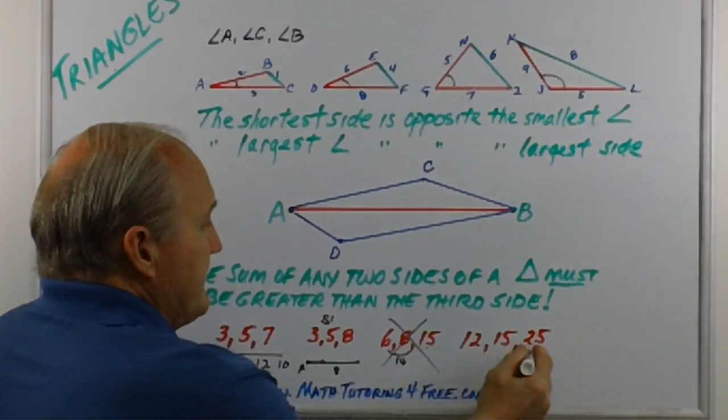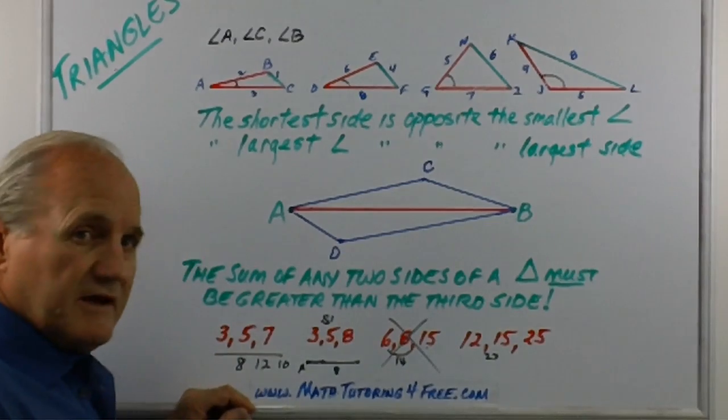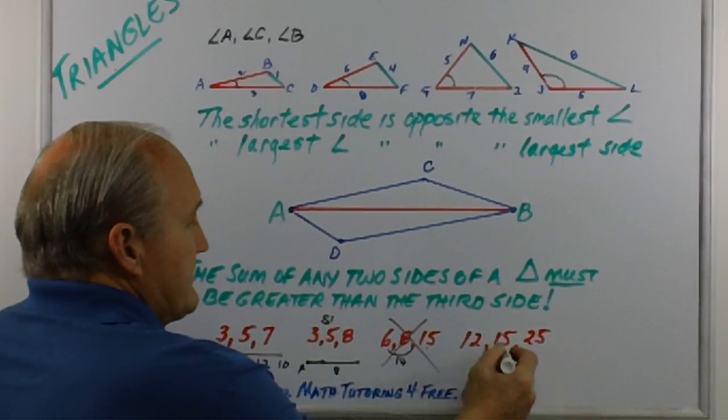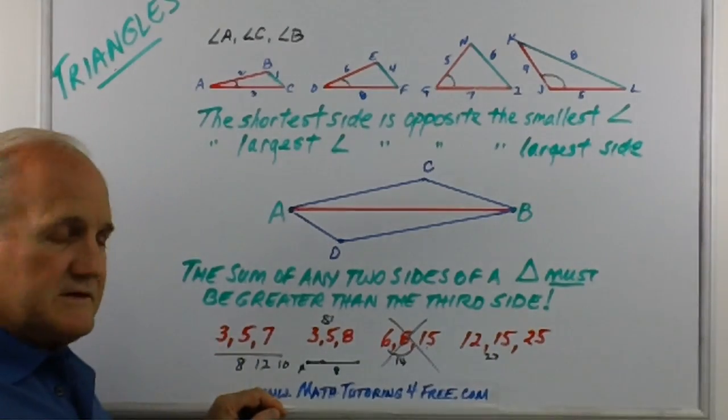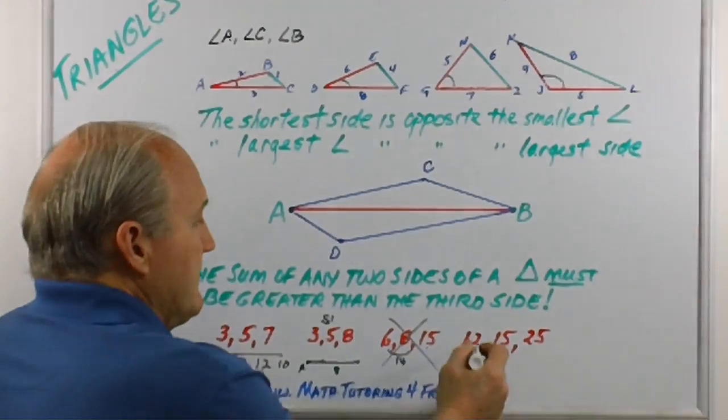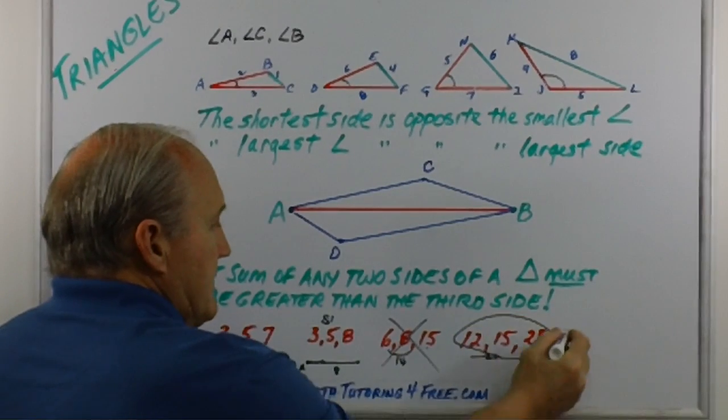Here we go: 12, 15, 25. 12 and 15, that's 27, that's greater than 25, that works. 15 and 25 is 40, that's greater than 12, that works. And finally, 12 and 25 is 37, that's greater than 15, so this one is okay.